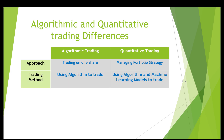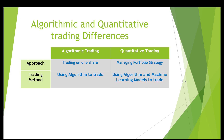Moving on to the second difference: algorithmic trading relies heavily on predefined algorithms and logic to execute trades based on indicators like RSI or moving averages. In quantitative trading, however, there is the option to incorporate machine learning models. These models analyze various features alongside market data to make trading decisions and manage portfolios dynamically. Essentially, while algorithmic trading follows preset rules, quantitative trading leverages AI to adapt and optimize trading strategies over time.